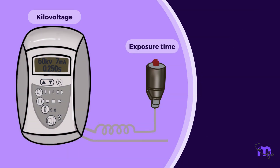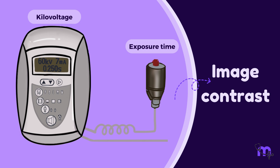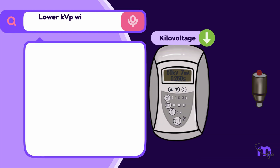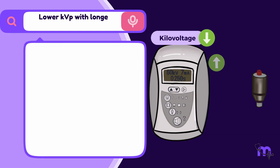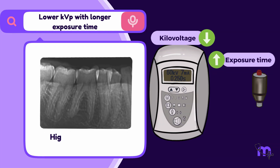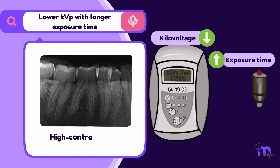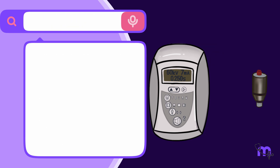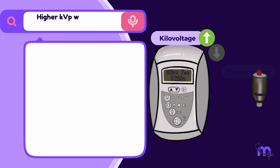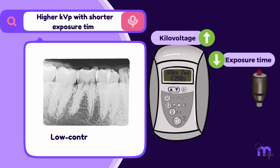KVP and exposure time also influence image contrast. A lower KVP with a longer exposure time results in a high contrast image where details are distinct. Conversely, a higher KVP with a shorter exposure time produces a low contrast image, making it difficult to identify abnormalities.